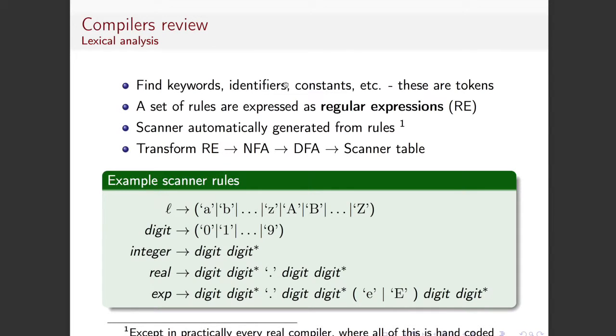All right, so the lexical analysis bit, it finds, as I said earlier, it finds the keywords, identifies constants, and makes these as tokens. So a token has some information in it, which we'll come to in a bit. And the way it works out how to take the string of characters in your program and work out which tokens they are is that it has a set of regular expressions.